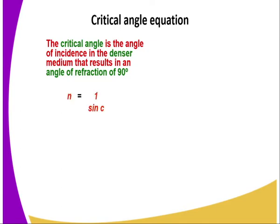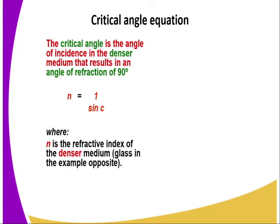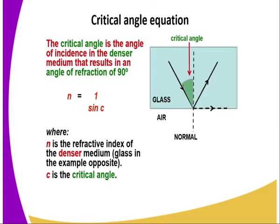Therefore, the refractive index N is given by one over sine C, where C is the critical angle and N is the refractive index of the denser medium. For instance, in this case we have glass as an example, and C is the critical angle.